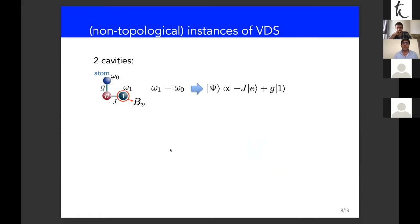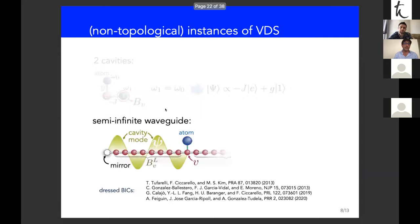No assumption has been made on the photonic bath — it could even be non-topological. Two non-topological instances of VDS: the simplest is just two cavities V and one; when the cavity not directly coupled to the atom has the same frequency as the atom, a VDS arises as a superposition of the atom and a single photon on that cavity. Another instance from waveguide QED: an atom coupled to a semi-infinite waveguide, equivalent to an infinite waveguide with a mirror on one end. BV is the union of the semi-infinite waveguide to the right and an effective cavity between the mirror and the atom — if a cavity mode of this effective cavity matches the atomic frequency, a VDS arises, which is the so-called dressed bound state in the continuum.